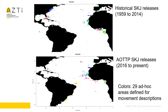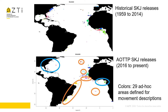Let's have a look at the respective spatial distributions of the historical and AOTTP releases. We can notice two regions that were historically intensively tagged but less intensively during the recent period: the Northwest Atlantic and the Gulf of Guinea. On the other hand, the AOTTP enabled tagging in Azores, north of Cabo Verde, in the Sierra Leone Rise and Sierra Leone Basin, and also Saint Helena and Brazil.